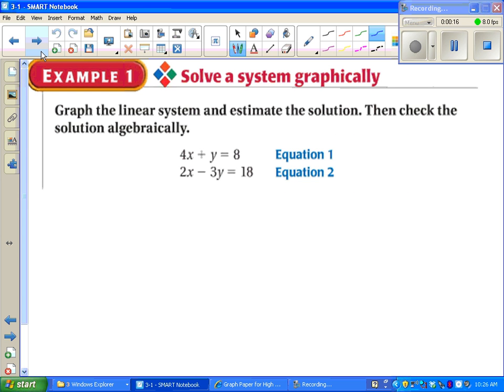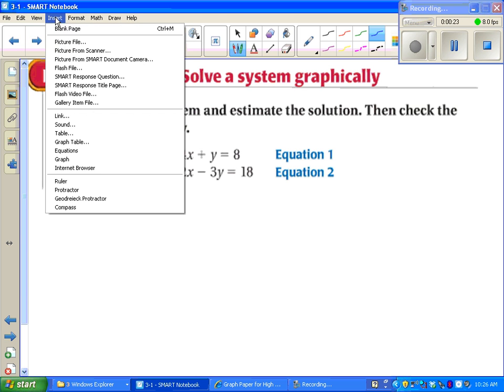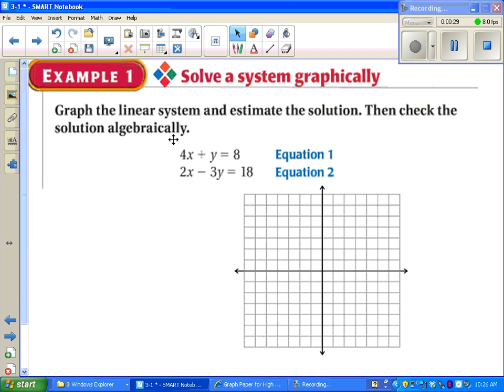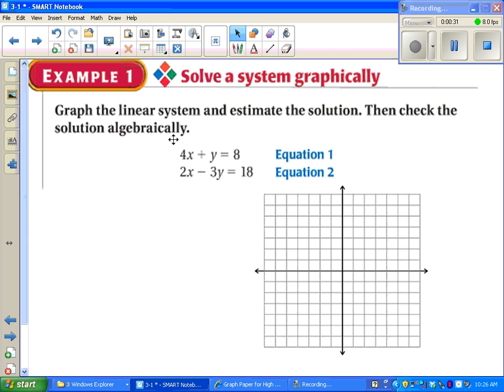A linear system is when you have two or more lines all in the same problem. In this case, we're looking at a graph. So our first step needs to be to graph both of these lines. Then we're going to look to see where they intersect.